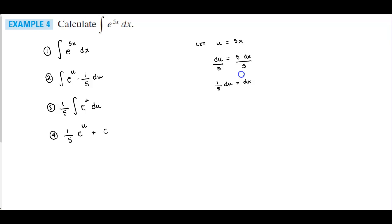Now we need to replace what u represents, which is 5x. So we get 1 fifth e to the 5x plus c.